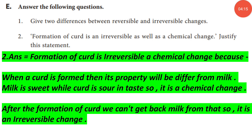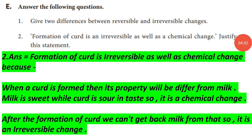Second, formation of curd is an irreversible as well as a chemical change. Justify this statement. Answer: Formation of curd is irreversible and a chemical change because when curd is formed, its properties differ from milk — milk is sweet while curd is sour in taste, so it is a chemical change. After the formation of curd, we cannot get back milk from it, so it is an irreversible change.